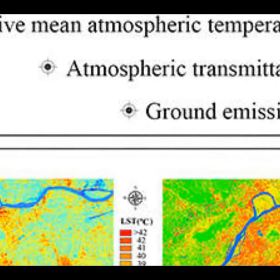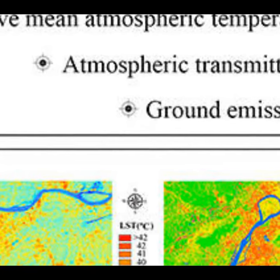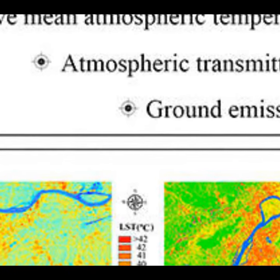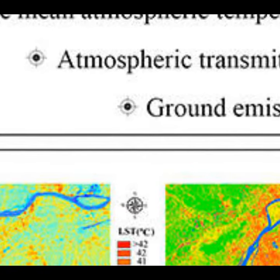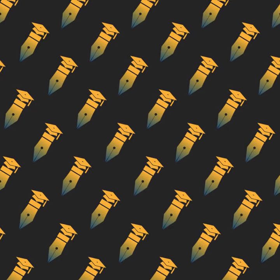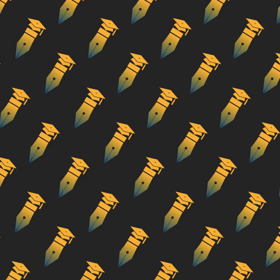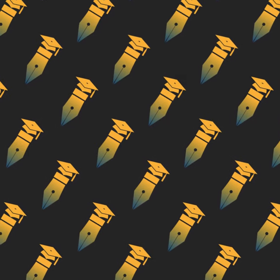To address this issue, researchers developed an improved mono-window (IMW) algorithm for LST retrieval from the Landsat 8 TIRS band 10 data. Three essential parameters — ground emissivity, atmospheric transmittance, and effective mean atmospheric temperature — were needed for the IMW algorithm to retrieve LST.